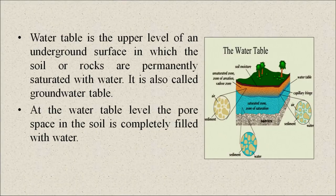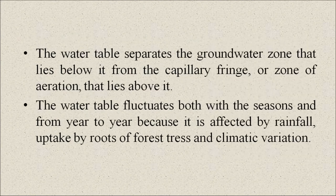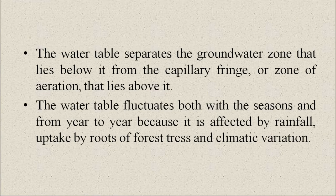Now let us come to the water table. The water table is the upper level of an underground surface in which the soil or rocks are permanently saturated with water; it is also called the groundwater table. At the water table level, the pore space in the soil is completely filled with water. The water table separates the groundwater zone below it from the capillary fringe or zone of aeration above it. The water table fluctuates both with the seasons and from year to year because it is affected by rainfall, uptake by roots of vegetation, and climatic variations.